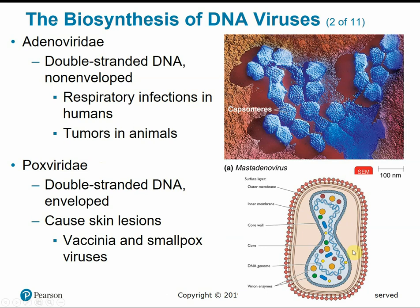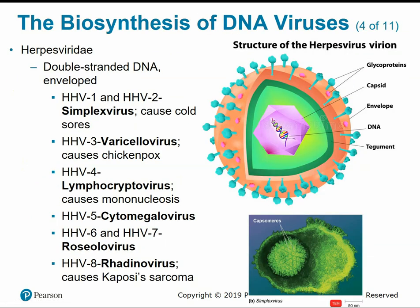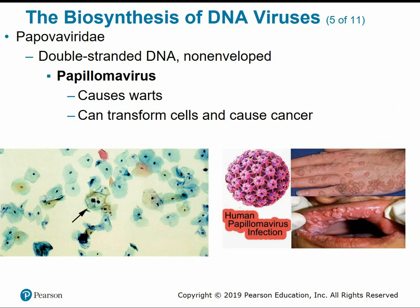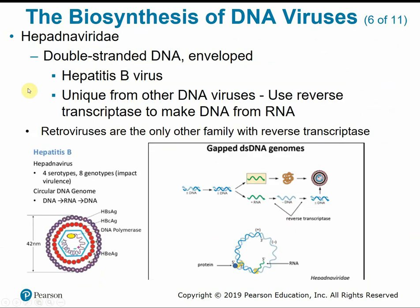The varicella virus causes chicken pox; others in the herpesviridae family cause infectious mononucleosis, roseola, and Kaposi's sarcoma. Papovaviridae contains double-stranded DNA and is non-enveloped; this includes the papillomavirus, which can cause warts and cervical cancer. Hepadnaviridae is the family that includes hepatitis B virus — a double-stranded DNA virus with an envelope. 'Hepadna' stands for hepatitis DNA virus. This virus is unique from other DNA viruses because it uses reverse transcriptase to make DNA from RNA.